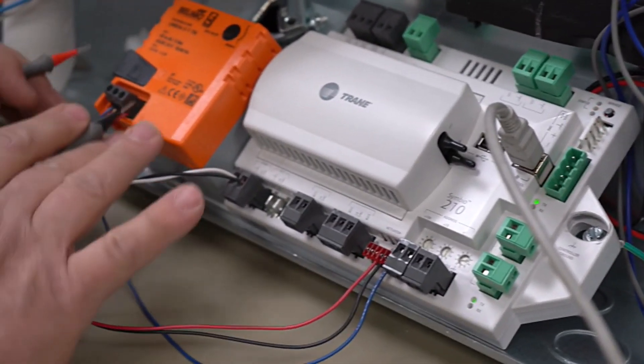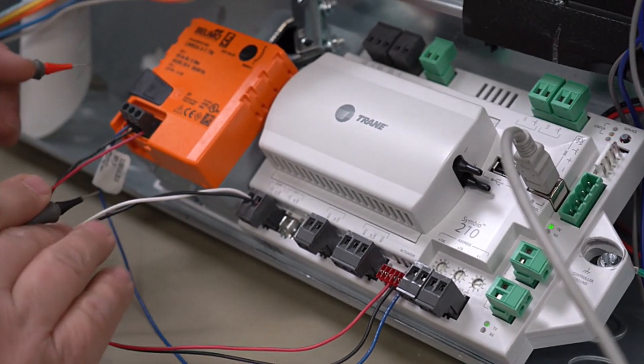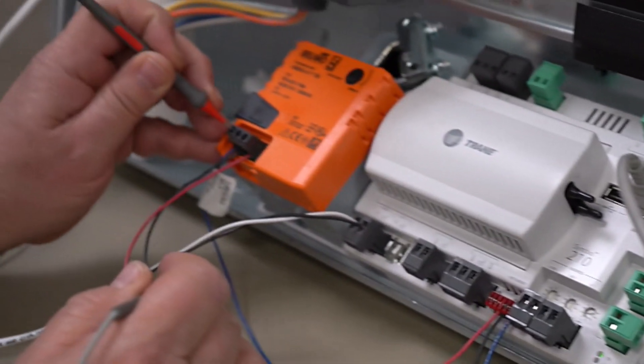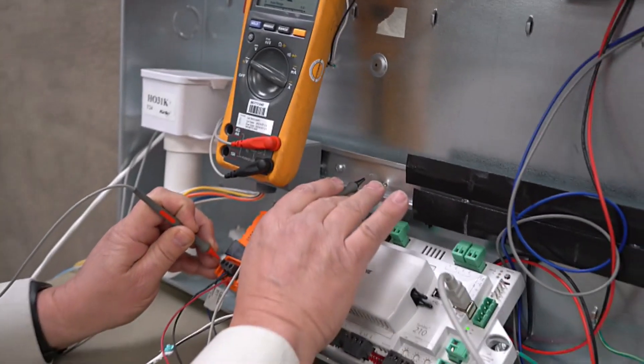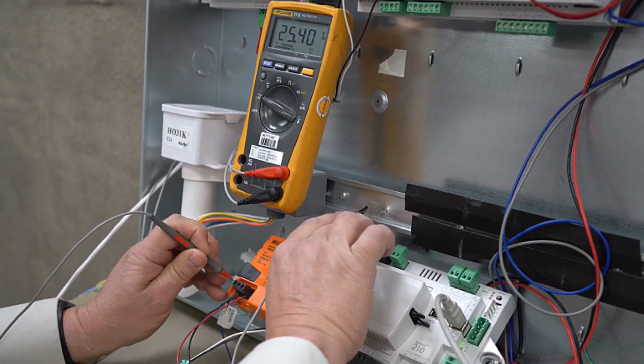So this blue wire here, we're going to measure all our voltages over here at the actuator just for ease of operation here. So if we look on that blue wire, that's our hot leg. So there's our 24 volts going to our actuator.